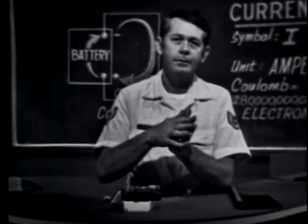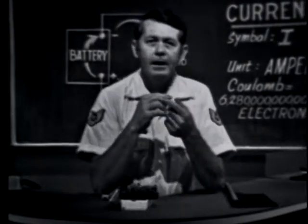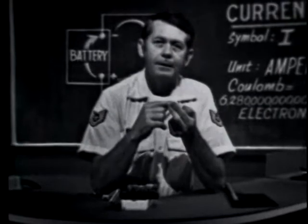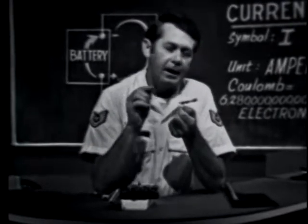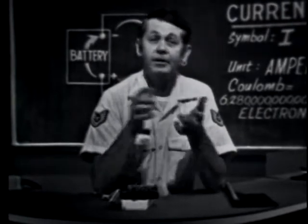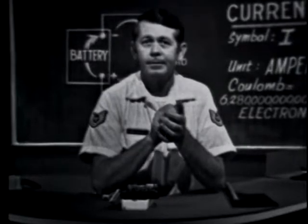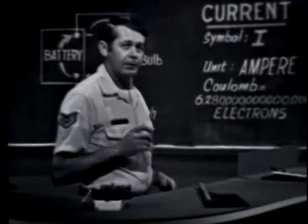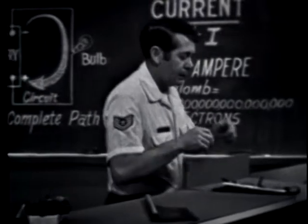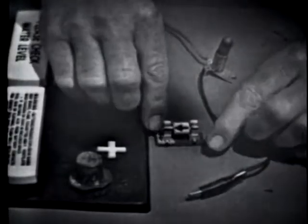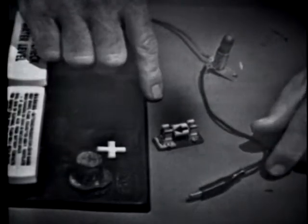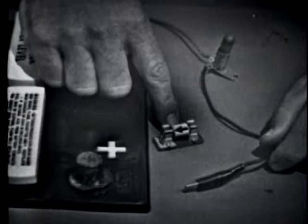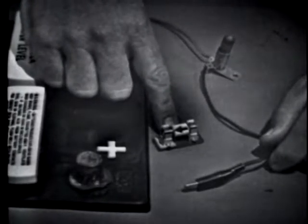For example, what is the direction of current with respect to the voltage source? We said that electrons move from negative to positive, but how do we know that's true — and besides, what difference does it make? Let me show you the importance of knowing how current flows. Some devices will operate only when current is flowing in the proper direction; this semiconductor diode is such a device.